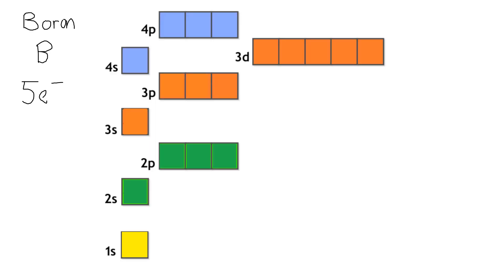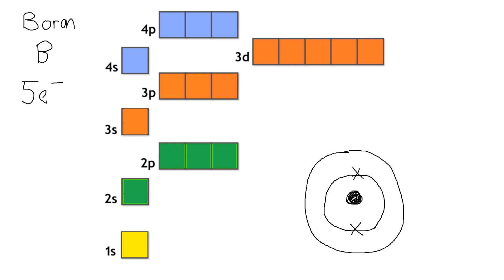On this slide here, I've included the order with which you fill the orbitals for different elements. At GCSE, you would have learnt the circle method. For instance, if you take boron, which has got five electrons, you've got the nucleus in the centre. Then you have your first shell of electrons, which can hold two electrons. Then you go to your next shell, which can hold up to eight, but there's only three left over — so one, two, three. The configuration for boron would be two, three.